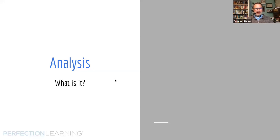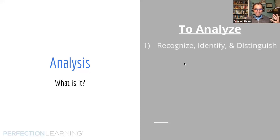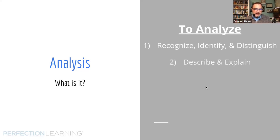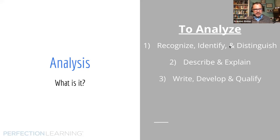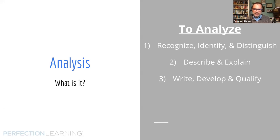To analyze, when we think about what we're cognitively asking students to do: first, recognize, identify, and distinguish the things in a text — putting their finger on things. Then describe and explain — describing what they're seeing, explaining how that thing works. Then write, develop, and qualify. These are three levels. Recognize and identify is level one — the lowest level, a low Bloom's level. It's what I used to call 'battleship' — just seeking and destroying things.